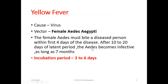The cause of yellow fever is a virus, so this is a viral fever. The causative factor is transmitted when the female Aedes mosquito bites an infected person within the first four days of the disease. After a 10 to 20 day latent period, the Aedes mosquito becomes infective for as long as seven months. The incubation period for yellow fever is three to six days — meaning symptoms start developing within three to six days of the mosquito bite.